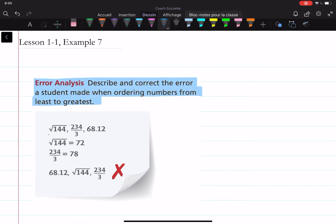So if we need to order these from least to greatest, let's do that over here, let's figure this out. Well, what's the square root of 144? 12. And then what's 234 divided by 3?